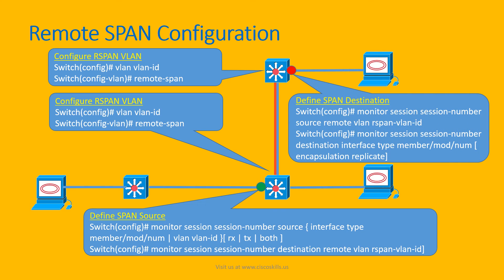Next, configure the SPAN destination on the remote switch at global configuration mode: monitor session [session-number] source remote vlan [RSPAN-VLAN-ID]. Then specify the destination port where the analyzer computer is plugged in: monitor session [session-number] destination interface [interface]. You can also capture Layer 2 protocol packets using encapsulation replicate, and you can filter VLANs as needed.